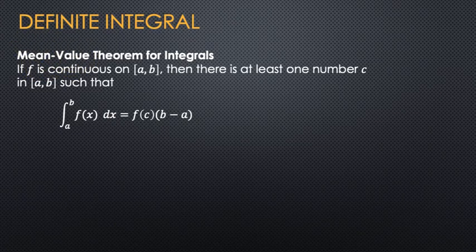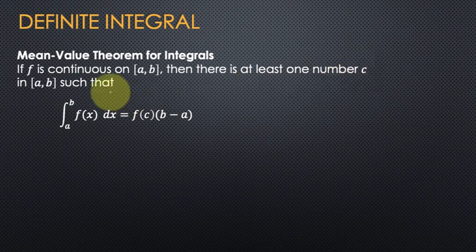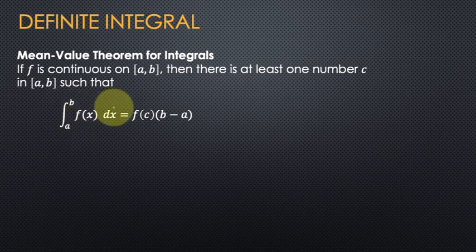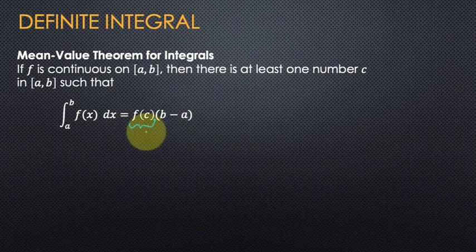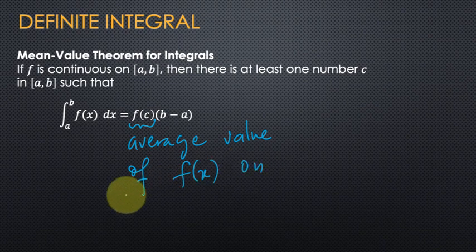Mean Value Theorem for integrals. If f is continuous on [a, b], then there is at least one number c in [a, b] such that the integral from a to b of f(x) dx is equal to f(c) times (b minus a). f(c) is actually the average value of f(x) on interval [a, b].